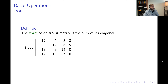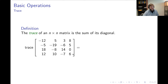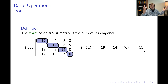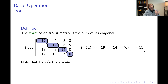The last operation to introduce is trace. Trace is something we do to square (n by n) matrices — it's simply the sum of all diagonal entries. For a four by four matrix, we look at the 1,1; 2,2; 3,3; and 4,4 positions and add them together. For this particular matrix, that's −12 + (−19) + 14 + 6 = −11. Importantly, the trace of a matrix is a scalar quantity.